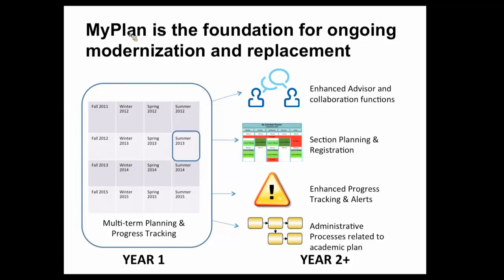Then the idea of actually finding courses by when they're available, getting into more section planning information, and then that leading into the idea of a registration cart. There's an obvious flow of activity: I'm trying to figure out which program I want to be in, which courses get me there, when can I actually take those courses, and then I want to register. So we're seeing My Plan as the beginning of that cycle.